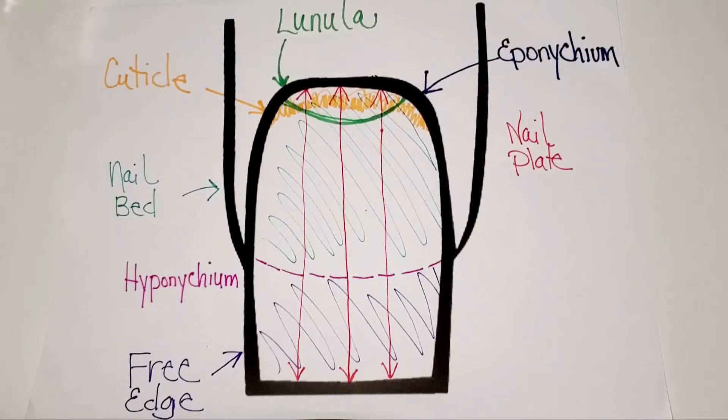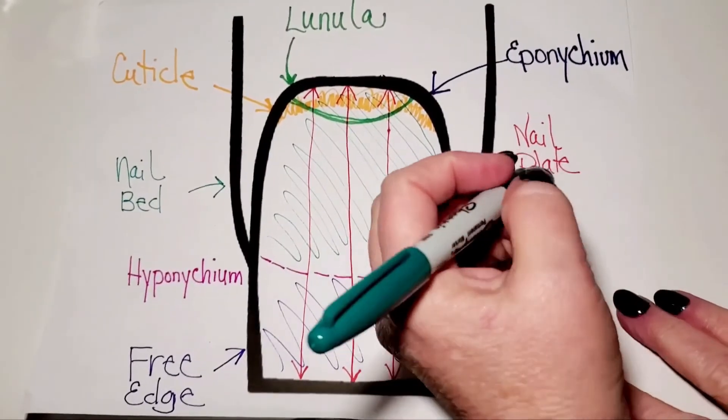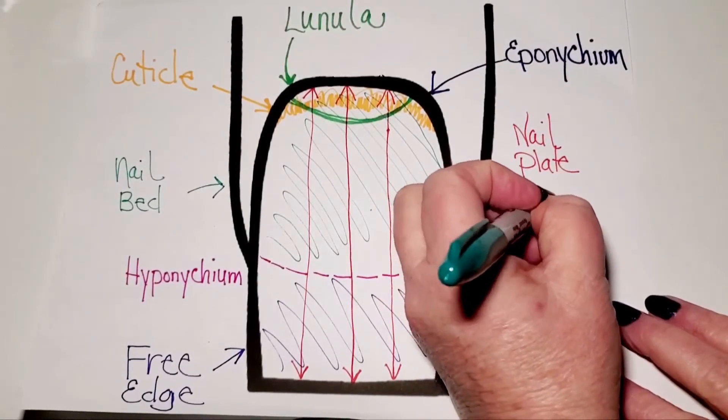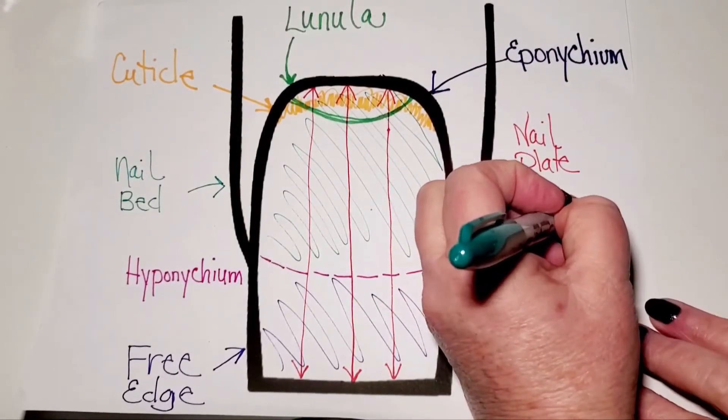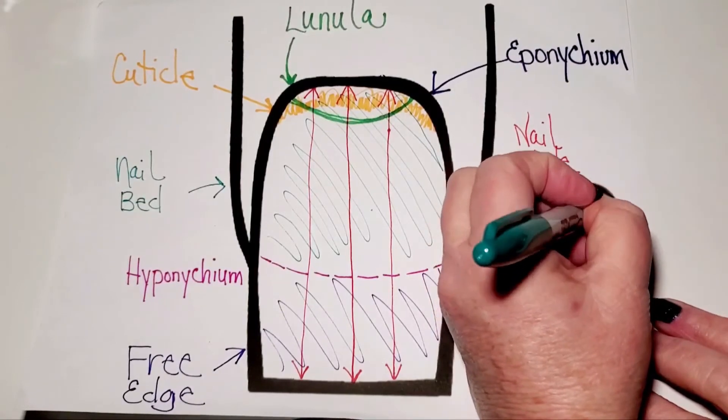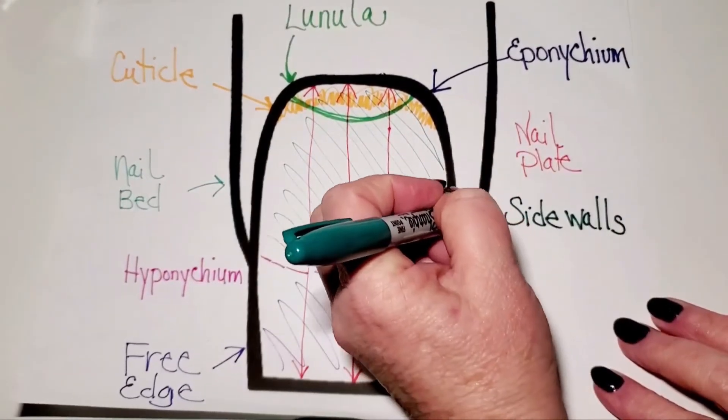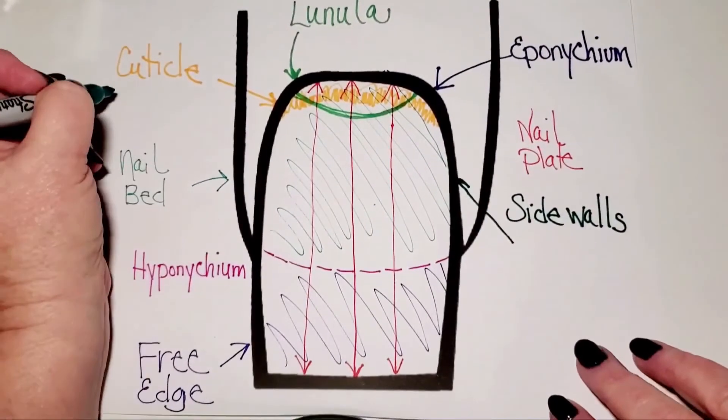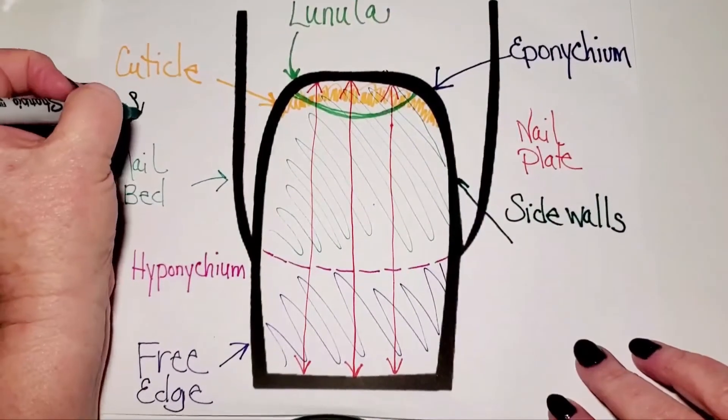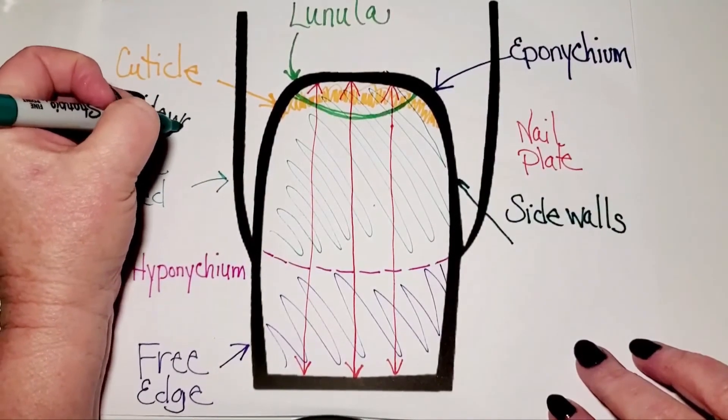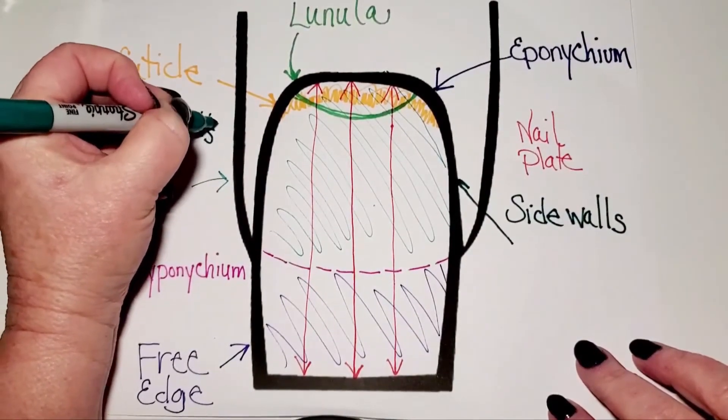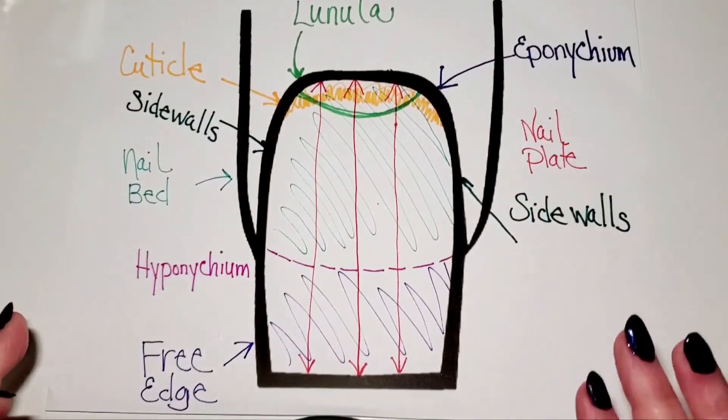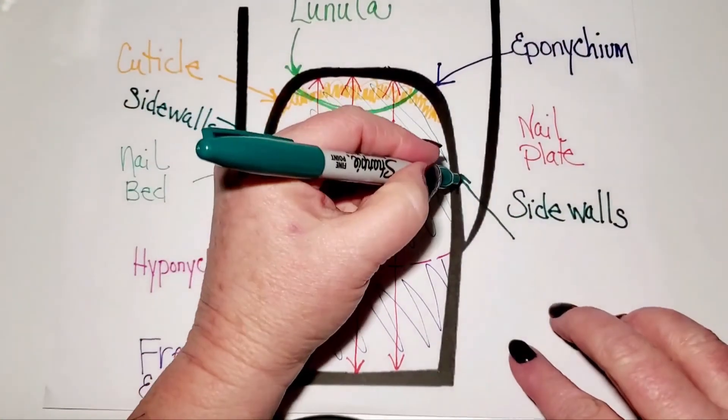So the last thing I'm going to talk about is the sidewalls. Now, this right here is your sidewalls. I'm going to write this right here, too. That's down the side of your nail plate. Those are called your sidewalls.